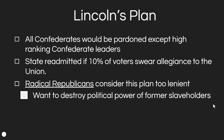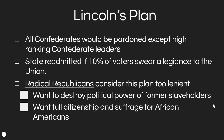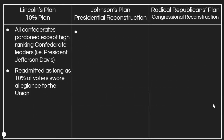For the Radical Republicans of the time — and these are not your modern-day Republicans — Lincoln's plan was far too lenient. They wanted a plan that destroyed the political power of former slaveholders. They wanted to absolutely crush them politically, bring them back into the Union kicking and screaming. They wanted full citizenship and suffrage for African Americans guaranteed. In order to come back into the Union, states would have to give citizenship to former slaves and give them the right to vote.